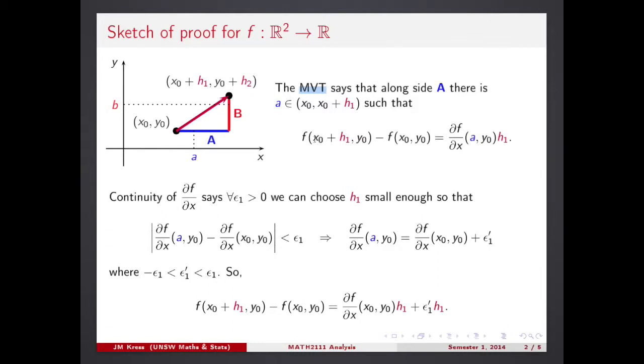You see we take the difference of the function in the point x0 plus h1, h1 is the increment, the horizontal increment or horizontal part of the increment. And y0, so this point on the left-hand side, that's the corner point. And x0, y0 is the original black point. So, the change of the function between these two points can be replaced by the derivative in some middle point times the increment of the argument. That's exactly the statement of the mean value theorem.